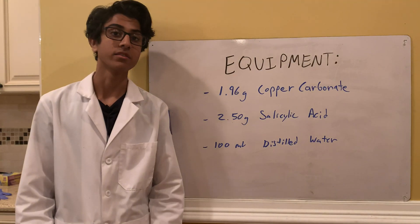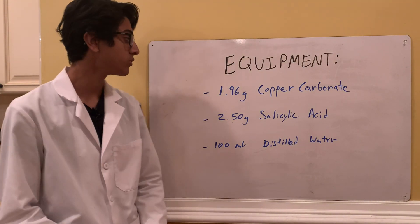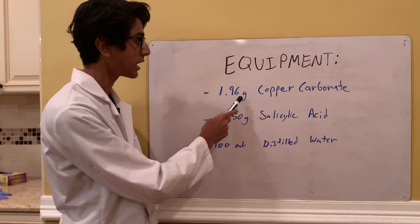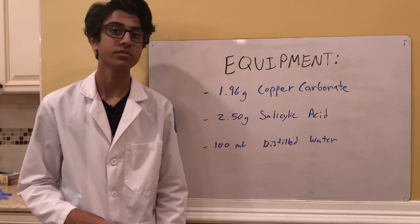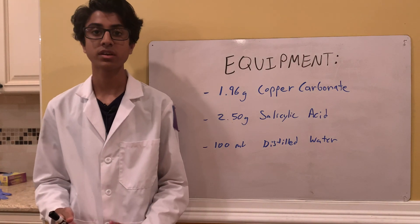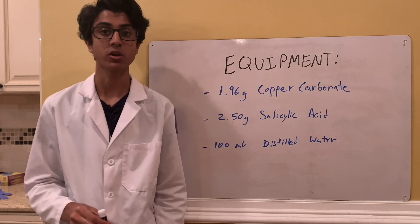The paper goes into further analysis on the physical properties of this copper salt, doing things like infrared analysis, X-ray analysis, and thermogravimetric analysis, which is all pretty interesting. I'll have the link to this paper in the description. The equipment for this experiment includes 1.96 grams of copper carbonate — I actually made this in one of my previous videos, so the link to that will be in the description.